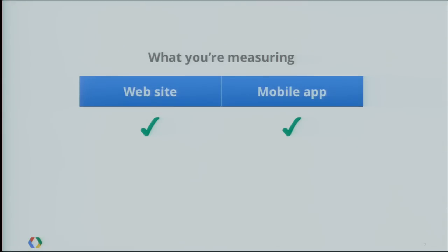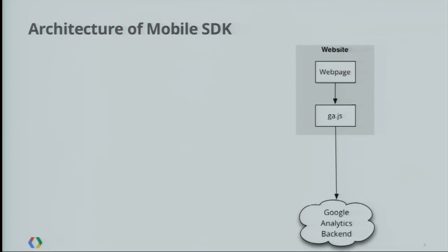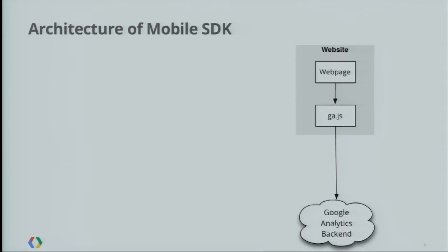So what have we seen? The introduction of mobile apps as a first-class citizen in GA — the sign-up flow and new reporting. Next, I'd like to look at how you actually add this to your application. Let's look at the architecture. For a website, you have a web page that includes ga.js JavaScript, which has an API for tracking events and page views, and those get sent to the Google Analytics backend. It's very straightforward. It's a little more complicated in the mobile case.